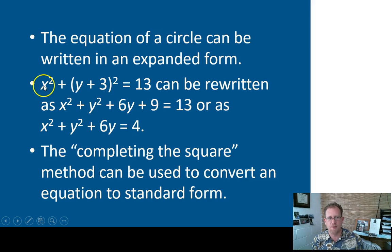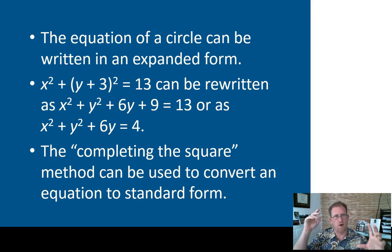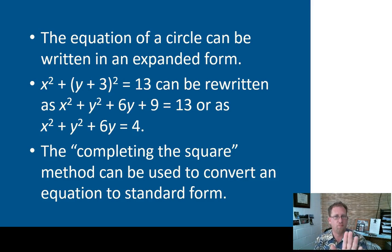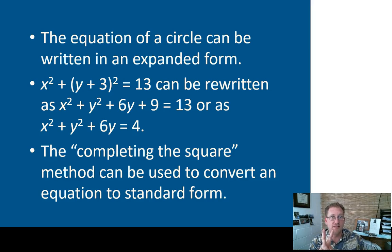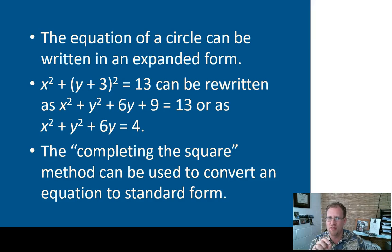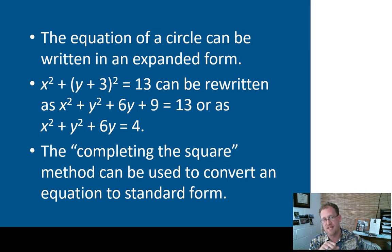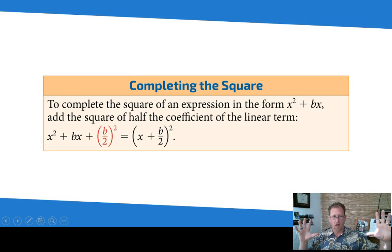This example only had us expand one term since x squared is just x squared. It's possible though that you have (x minus 2) squared plus (y plus something) squared and you've got to FOIL both and combine — it gets messy, but it's okay. There is a method called completing the square that can be used to convert an equation back to standard form.